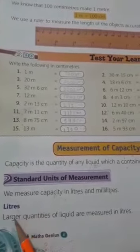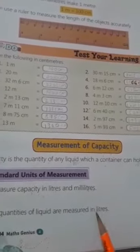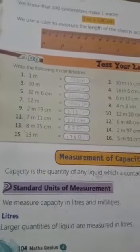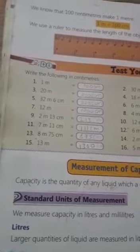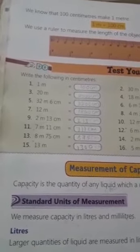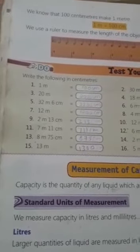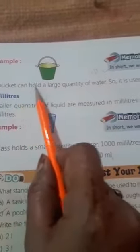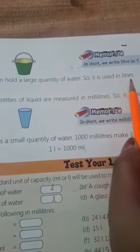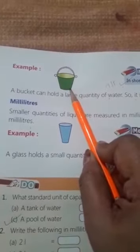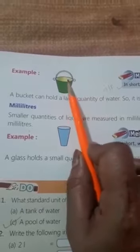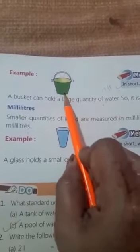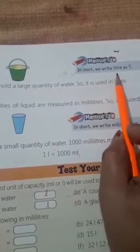So, first one is liters. Larger quantities of liquid are measured in liters. Aap ko zyada quantity mein jo liquid chahiye hota hai, jaisi ki milk. Aap ko two liters chahiye, three liters, five liters. Yani zyada quantity mein chahiye, to aap kis mein measure karenge use? Liters mein. For example, a bucket can hold a large quantity of water, so it is used in liters. Bucket ki capacity zyada hoti hai na, to is mein jo liquid rahega, that is water, to is ki jo capacity hai wo zyada hogi. That is measured in liters. In short, we write liters as L.